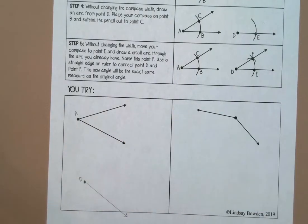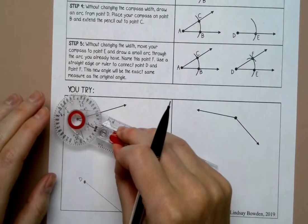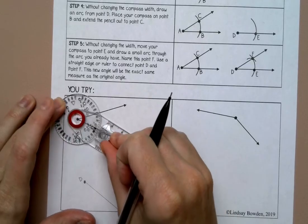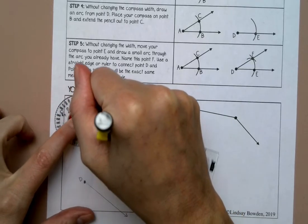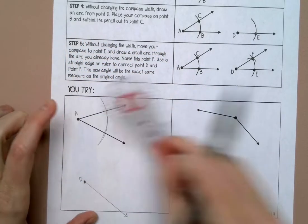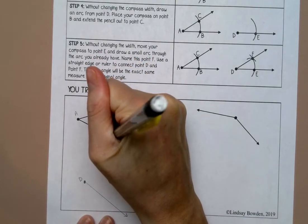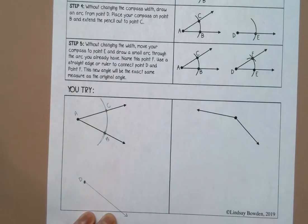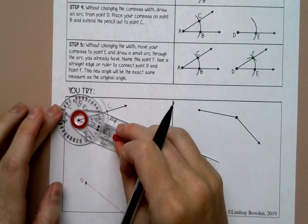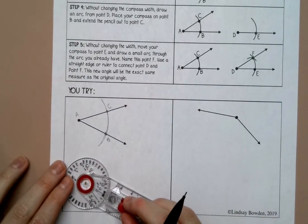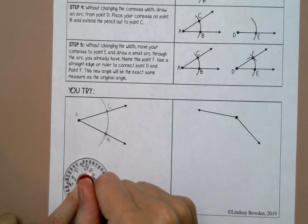All right, then I'm going to put my compass on A and I'm going to draw an arc through both rays. I'm going to label this one B and this one C. Then without changing the width, I'm going to go to D and I'm going to draw a similar arc.